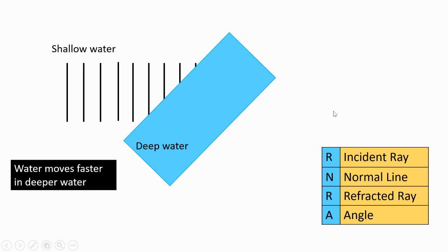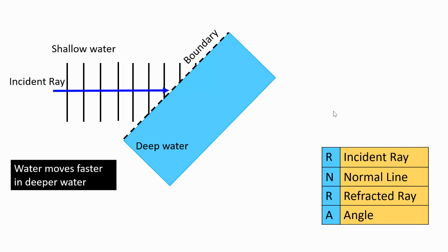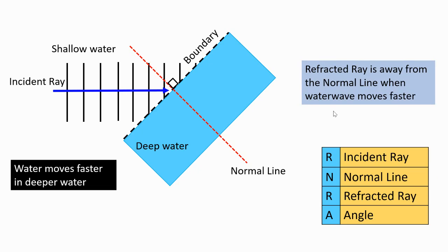Let's start with the incident ray, which is perpendicular to the wavefront. Next, identify the boundary — where the transition between shallow and deep water occurs. Then draw the normal line, which is perpendicular to that boundary, making a 90-degree angle with it. Now define the refracted ray. The water moves faster in deep water, so the refracted ray is going to be away from the normal line. Extend lines from the wavefront to make a 90-degree angle with the refracted ray.